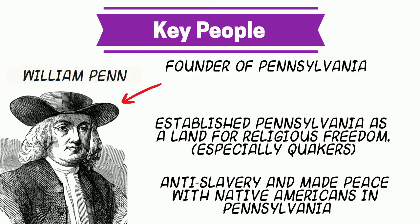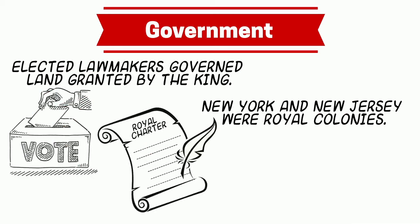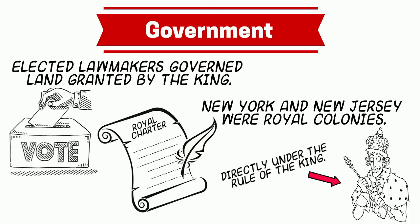Since many of the Middle Colonies were lands granted by the King, lawmakers were elected by the people of the colonies to run the show while the King was away. New York and New Jersey were completely different — these were royal colonies, which were directly under the rule of the King.